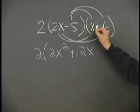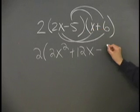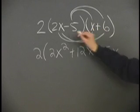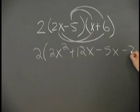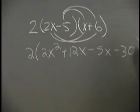Negative 5 times x is negative 5x. Negative 5 times 6 is negative 30 and we keep the brackets.